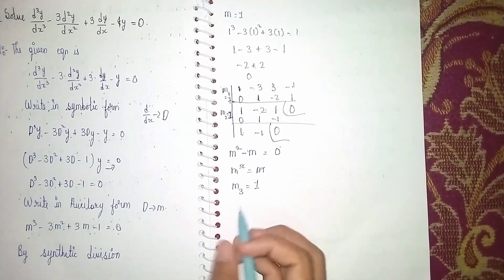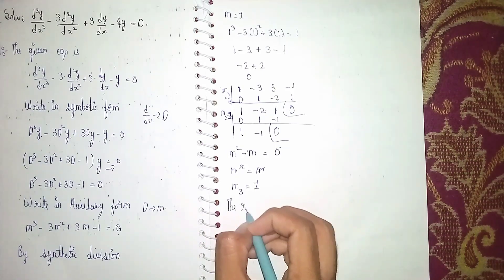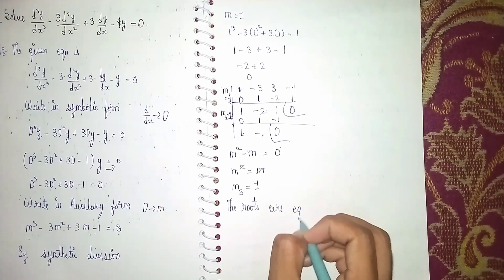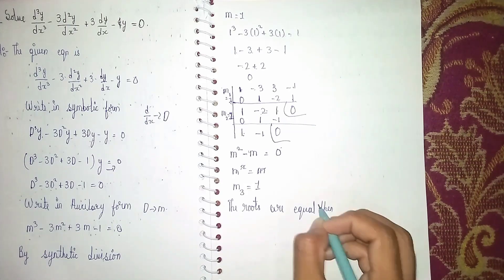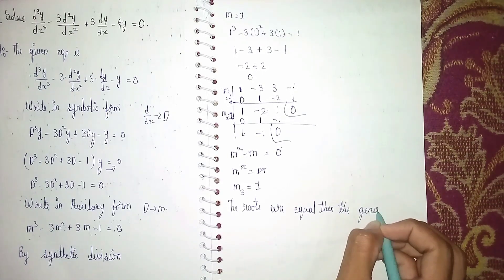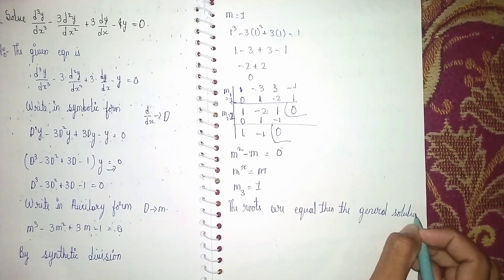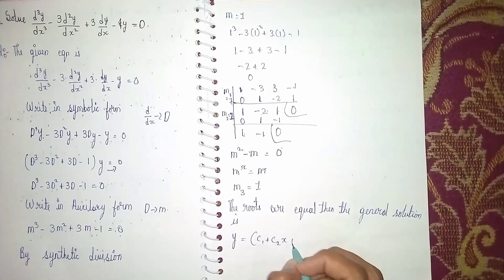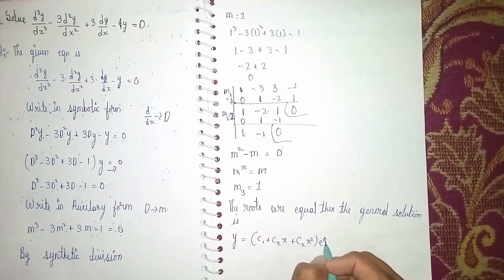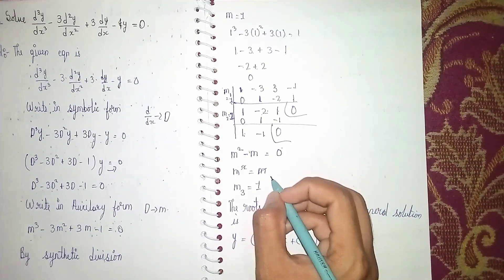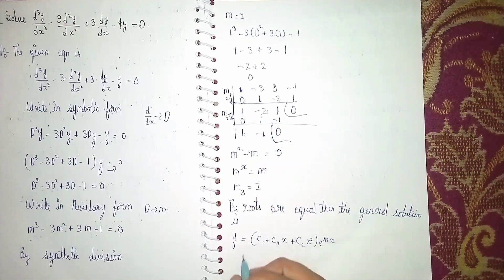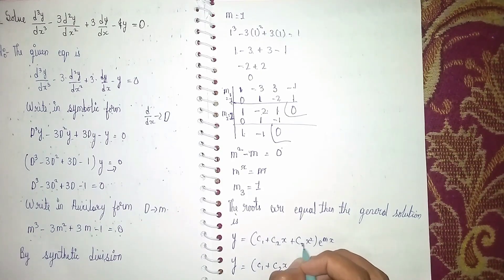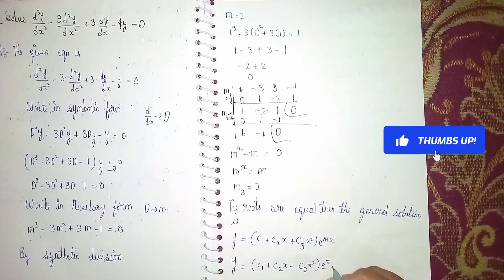Since all roots are equal and equal to 1, the general solution is: y equals (c₁ plus c₂x plus c₃x²) times e^x. Our final answer is y = (c₁ + c₂x + c₃x²)eˣ. Thanks for watching.